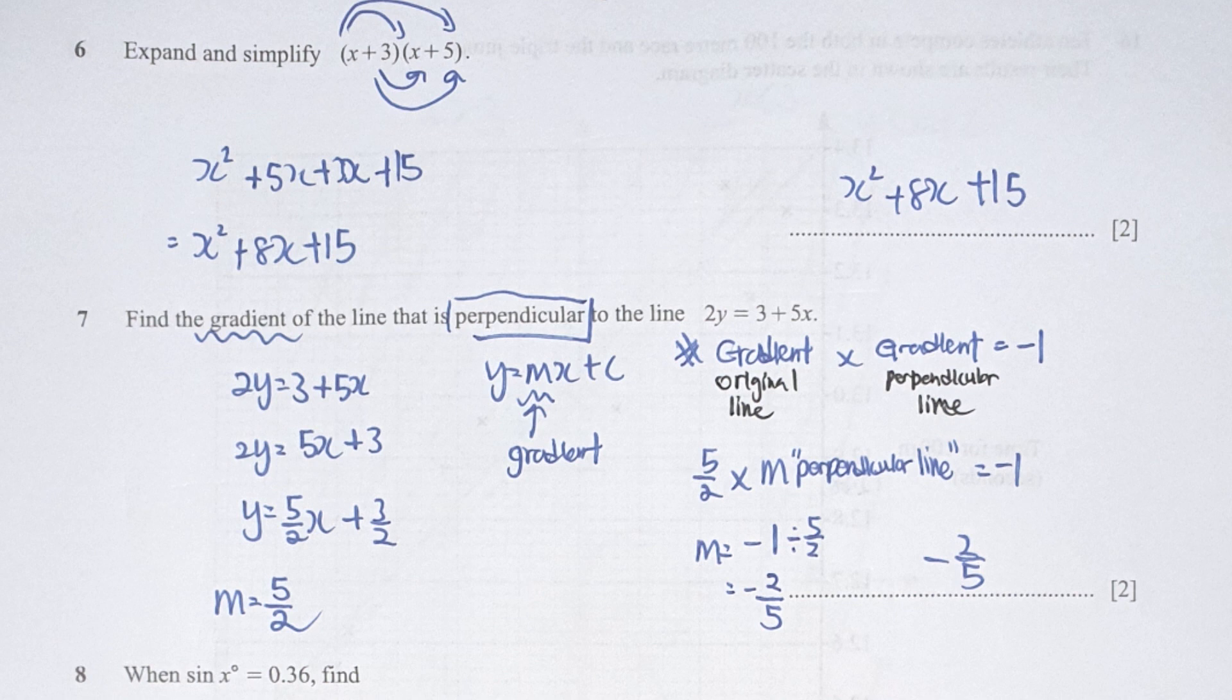I rearranged it and got my gradient as 5 over 2. Gradient of the original line multiplied by gradient of the perpendicular line should be negative 1, so the gradient of the perpendicular line should be negative 2 over 5.